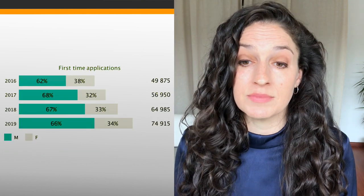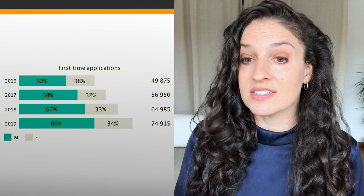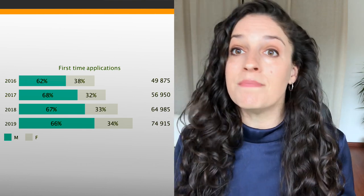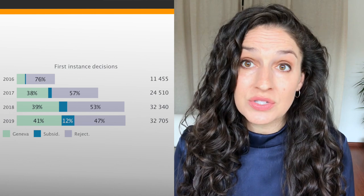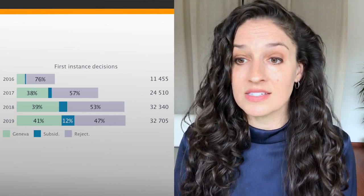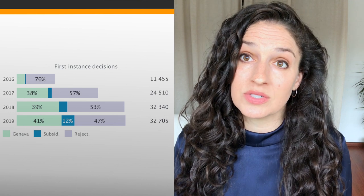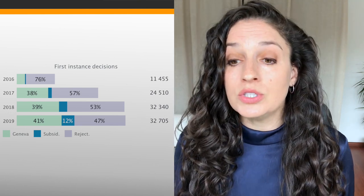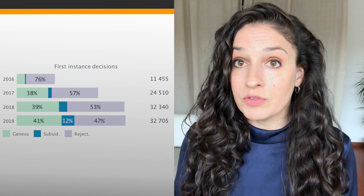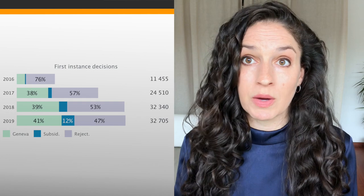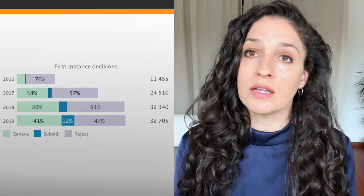Now let's look at asylum claims. First-time asylum applications were increasing between 2016 and 2019. As in many other countries, men made up a larger proportion of asylum seekers than women. Looking at first-instance decisions, in many cases half or more of applications were rejected between 2016 and 2019. However, especially between 2017 and 2019, quite a few people did receive refugee status based on the Geneva Convention — which makes sense given the large number of people from Syria seeking asylum in Greece.